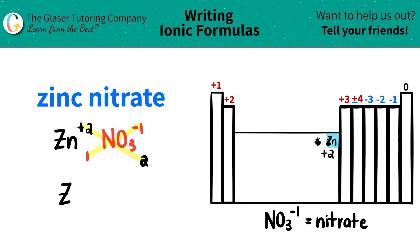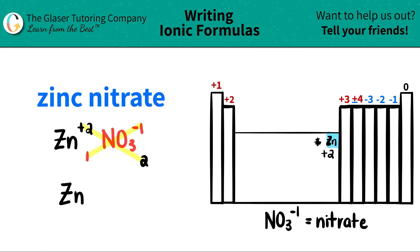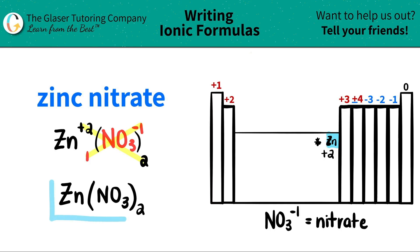Now let's write the formula. I have zinc, Zn. I only need one of them, so I don't have to write a subscript here. But now I have multiple polyatomics — in this case, I have two nitrates. When you have more than one polyatomic, you need parentheses. So I'm going to put parentheses, write the whole polyatomic which is NO3, close the parentheses, and then write that I need two of them. Zinc nitrate is Zn(NO3)2.